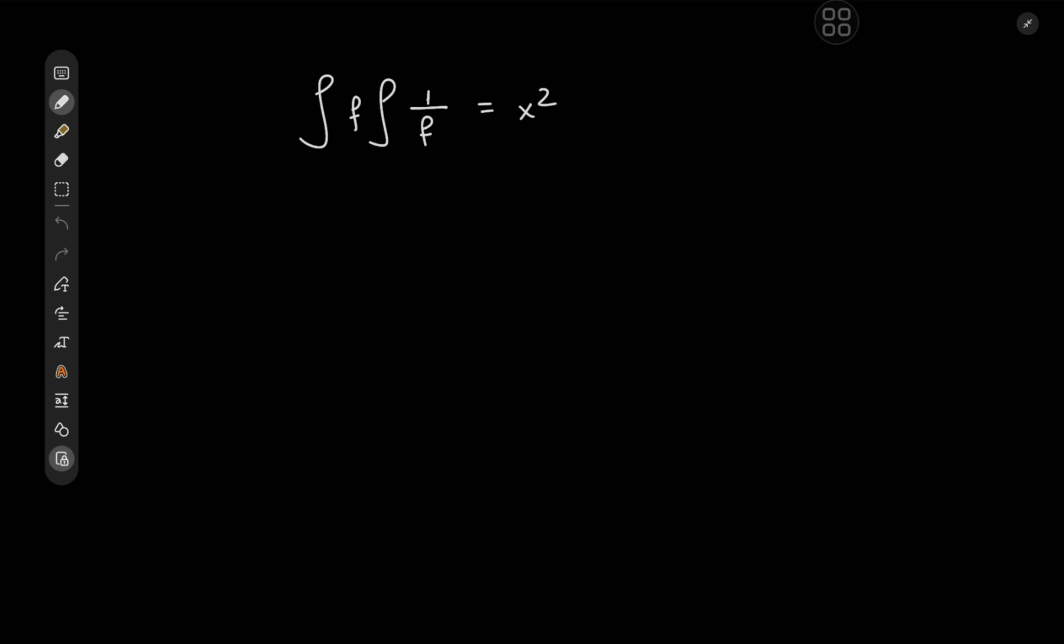We won't exactly need much calculus to solve this. Rather, we are going to use some linear algebra. Enough talking about the solution development. Let's just get straight to solving it. We're looking for a function f such that the integral from 0 to x of f(t) dt times the integral from 0 to x of 1 over f(t) dt equals x squared.